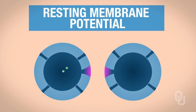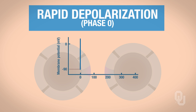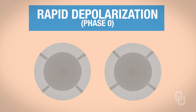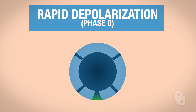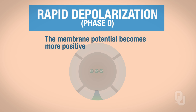This cell is now going to start the rapid depolarization phase, which is called phase zero. Because of a change in membrane potential from an adjacent cardiac contractile cell through the gap junction, this causes voltage-gated sodium channels to open. Through voltage-gated sodium channels, we have sodium influx. These are very fast channels, which means sodium gushes into the cell, making the membrane potential more positive. This is why it is called rapid depolarization, occurring during phase zero.